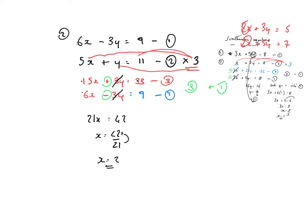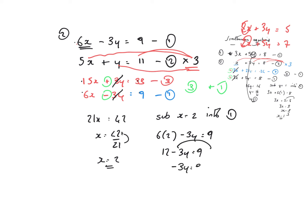I'm now going to substitute x equals 2 into one of the equations — I've got a choice of three, so I'll randomly pick equation 1. I replace x with 2: 6 lots of 2 minus 3y equals 9. That's 12 minus 3y equals 9. Bringing that across gives minus 3y equals 9 minus 12, so minus 3y equals minus 3. Dividing both sides by minus 3 gives y equals 1.